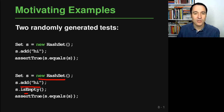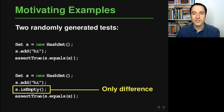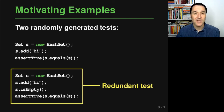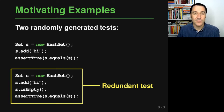Here you see another test which again creates a HashSet, calls add on it, calls another method, and then checks the same assertion. If you look closely at these two examples, you'll notice that the only difference is this call to isEmpty. If you think about what HashSets actually do, you'll see that this is actually a redundant test because the first and second tests are testing essentially the same thing. This is one of the ideas that the Randoop approach is implementing.